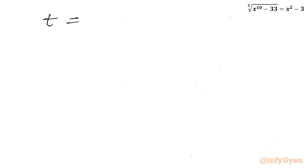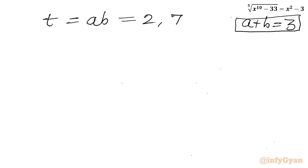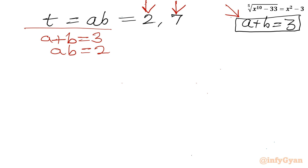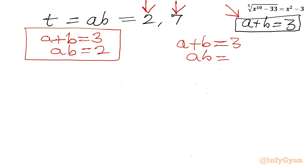Recall that t was our substitution for ab. So ab equals 2 or ab equals 7. Together with Equation 1, a plus b equals 3, we frame two systems: one with a plus b equals 3 and ab equals 2, and another with a plus b equals 3 and ab equals 7.